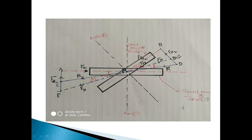The spiral gear axes are non-parallel and non-intersecting — they are not parallel to each other. The power transmission from gear one to gear two is non-parallel and non-intersecting. In case of a spur gear, the gear axes are parallel to each other; in case of a helical gear also, the gear axes are parallel to each other. For spiral gears, the axis number one and axis number two are at a certain distance, so they are not parallel and also not intersecting.